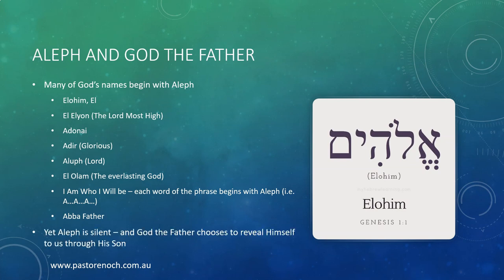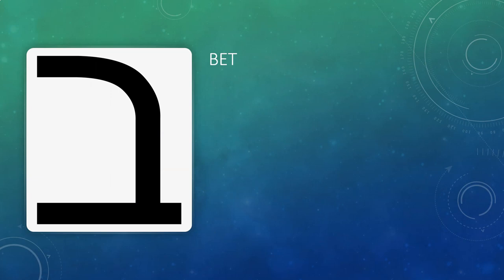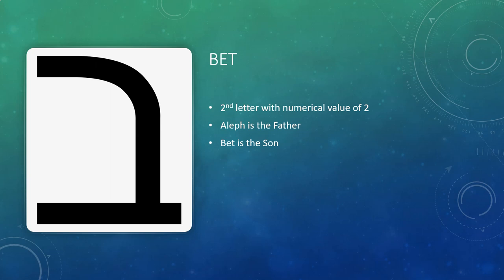Yet the letter Aleph is a silent letter in Hebrew — it has no sound in and of itself. And God the Father chooses to reveal Himself to us through His Son. So let's have a look at the next letter, which is the letter Bet. It's the second letter of the alphabet with a numerical value of 2. So if Aleph is the Father, then Bet will relate to the Son.